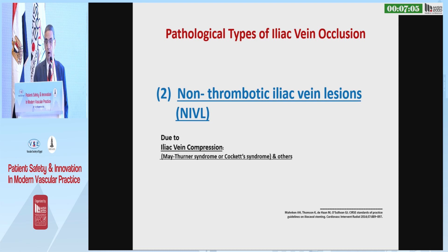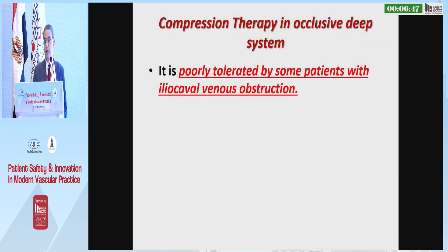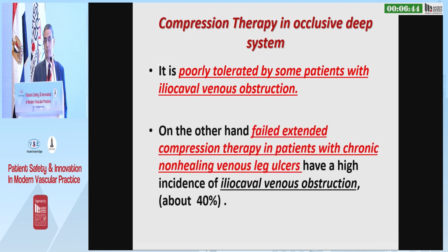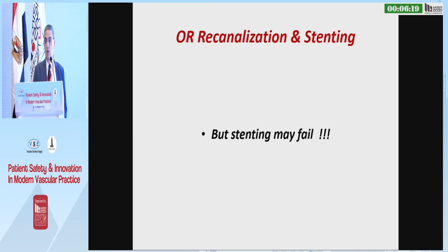The second type is the non-thrombotic iliac vein lesion — a new term — which includes all types of compression, such as May-Thurner syndrome or even compression of the right iliac vein. The options available to treat iliac vein occlusion may be compression therapy, though it is poorly tolerated by some patients with inducible venous obstruction. Failed extended compression therapy refers to the possibility of chronic iliac vein occlusion. Other options include pelvic venous bypass — the Palma procedure — with high complication rates used in severe cases, or recanalization and stenting, though stenting may fail.